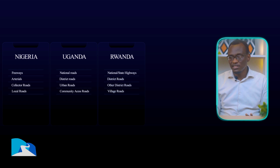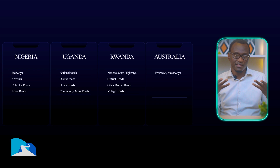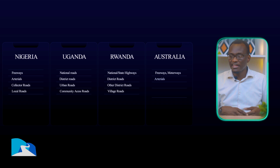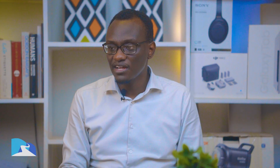In Australia, the highest class is freeways and motorways. Below that you have the arterials, then the collectors, then the local roads. And finally, Australia has something called special purpose roads — these are like industrial roads. Despite different naming, all countries are essentially describing the same four classes of roads.